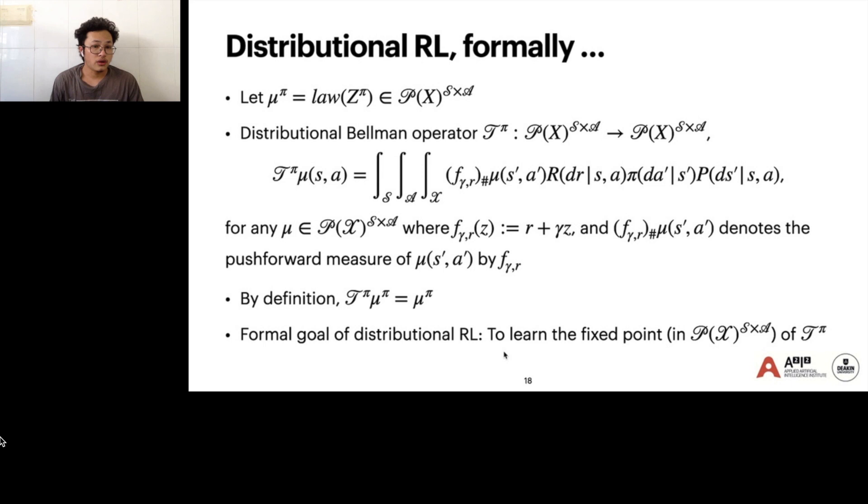The core of distributional RL, mathematically, is the distributional Bellman operator, which transforms one return distribution to another via the Bellman dynamic. The fixed point of the distributional Bellman operator is μ^π, which is the return distribution induced by policy π. The goal here in distributional RL is to learn the fixed point of the distributional Bellman operator. So instead of learning the value function, the fixed point of the Bellman operator, we learn the return distribution of the distributional Bellman operator.